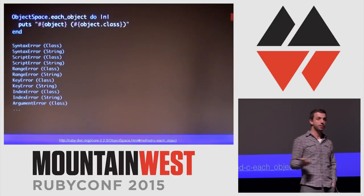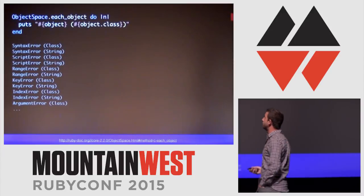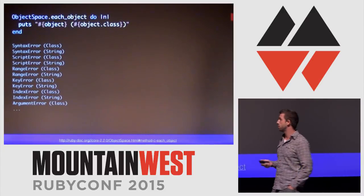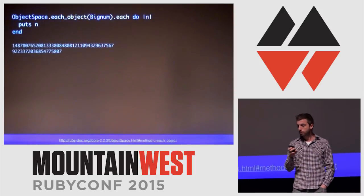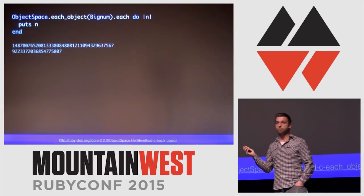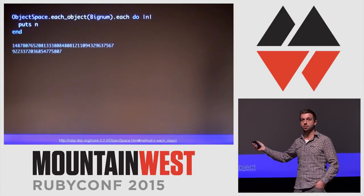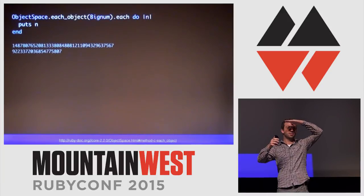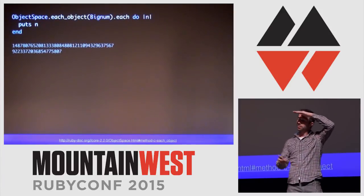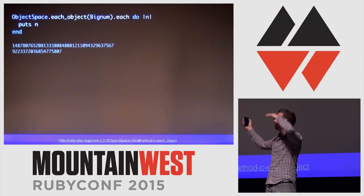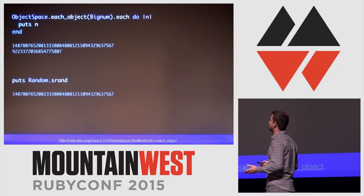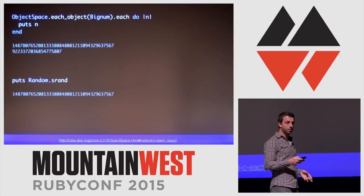ObjectSpace also allows you to do ObjectSpace.each_object, which goes through every single live object in the VM and yields to a block. The first 11 objects that come out are the first classes Ruby initializes — the error classes and their string equivalents. You can also pass in a class to iterate through each instance of that class currently live in the VM. For BigNum, you get two numbers: 2 to the 64th minus 1 and the random srand seed.